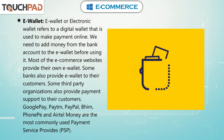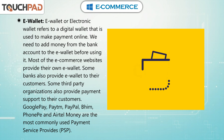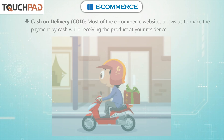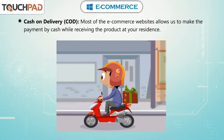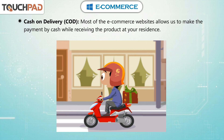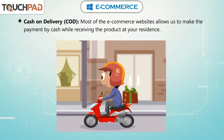E-wallet or electronic wallet refers to a digital wallet that is used to make payment online. We need to add money from the bank account to the e-wallet before using it. Most e-commerce websites provide their own e-wallet, and some banks also provide e-wallet to their customers. Some third-party organizations also provide payment support. Google Pay, Paytm, PayPal, BHIM, PhonePe, and Airtel Money are the most commonly used payment service providers (PSPs). Cash on delivery (COD): most e-commerce websites allow us to make the payment by cash while receiving the product at your residence.